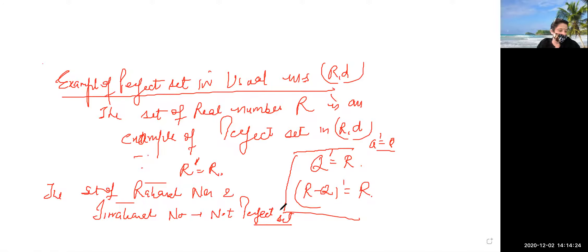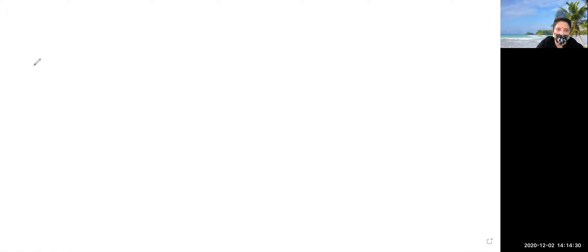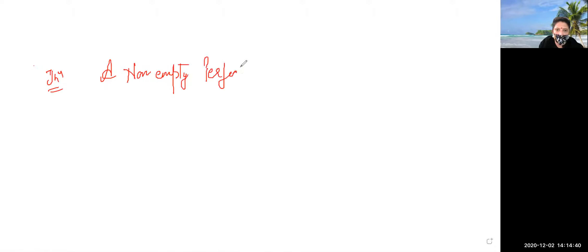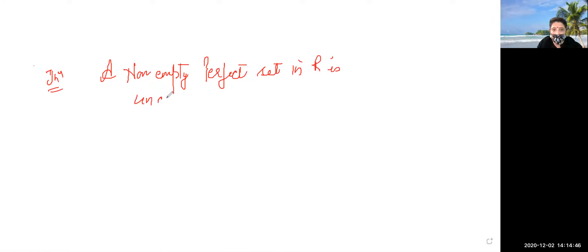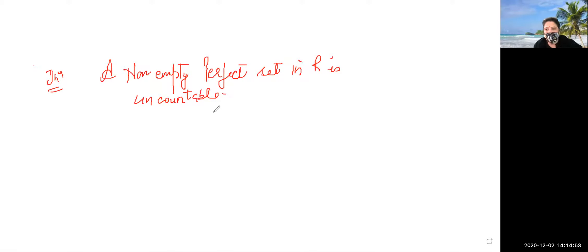Now we will state a result: a non-empty perfect set in R is uncountable. This gives us another criterion to prove that a set is uncountable, and the proof is done by the method of contradiction.